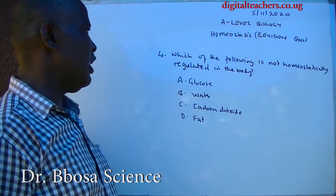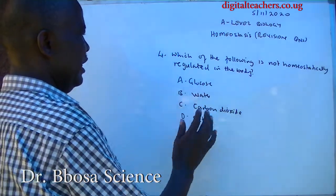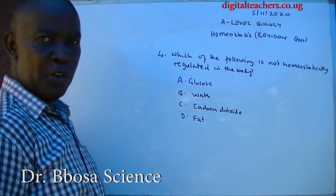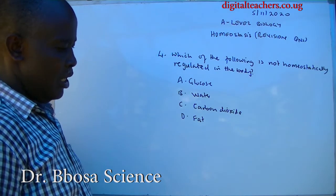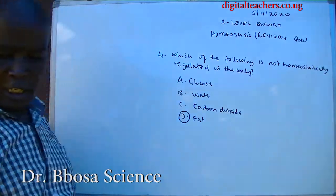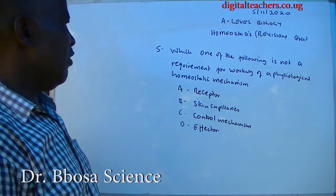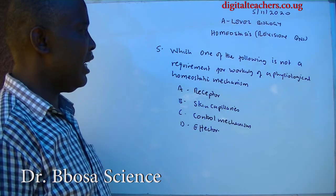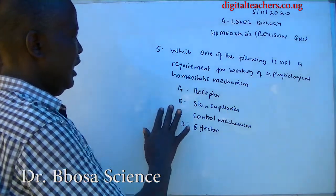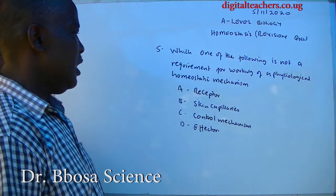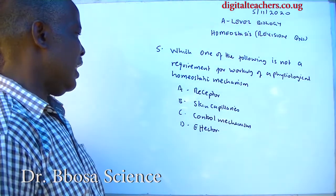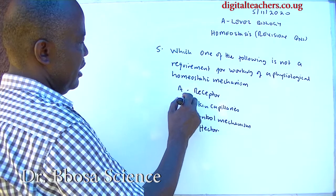Number five: which of the following is not a requirement for the working of a physiological homeostatic mechanism? A. Receptor, B. Skinny capillaries, C. Control mechanism, D. Effector. The answer is B: Skinny capillaries.